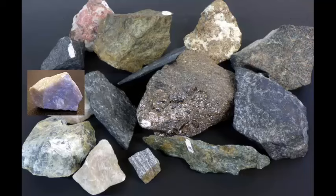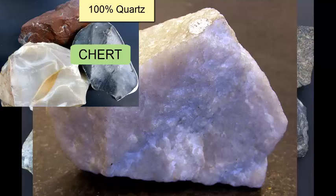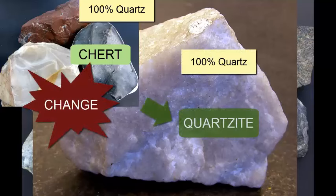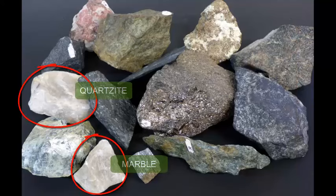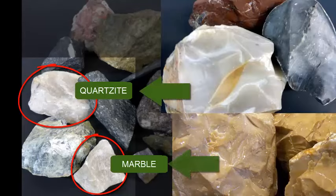The same is true of pure quartz parent rocks, like cherts and quartz sandstones. The corresponding metamorphic rock is called quartzite, and the only indication of metamorphic intensity, or grade, is the size of the crystals. So if we can identify a marble or a quartzite, what do we know? We know some likely candidates for the parent rock, but we have little to no knowledge of the metamorphic setting.